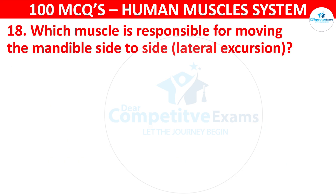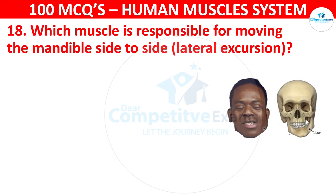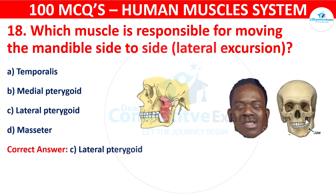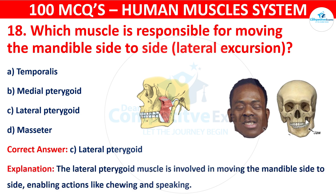Question number eighteen: Which muscle is responsible for moving the mandible side to side? Your options are: Temporalis, Medial pterygoid, or Masseter. The correct answer is lateral pterygoid. This muscle is involved in moving the mandible side to side, enabling actions like chewing or speaking.